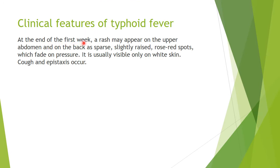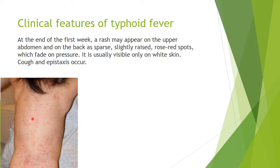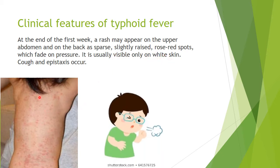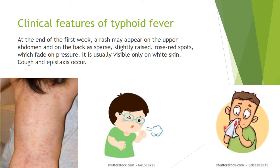At the end of the first week — around the sixth or seventh day — since Jack is a very fair-skinned boy, he will develop a rash. The rash will appear on the upper abdomen and on the back: sparse, slightly raised, rose-red spots, also called rose spots. These rose-red spots will fade on pressure. They are usually visible only on white skin. Cough and epistaxis will also occur at the end of the first week.